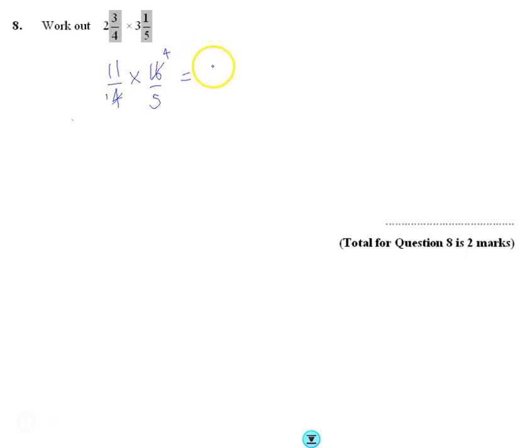You just multiply across the top, 11 times 4 is 44, and then across the bottom, 44 over 5.